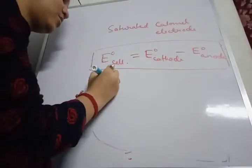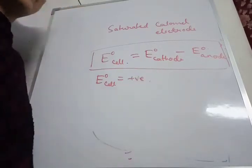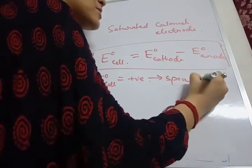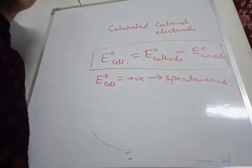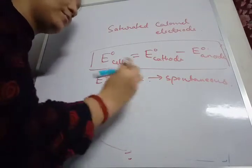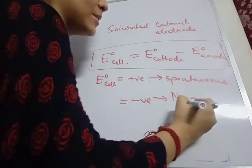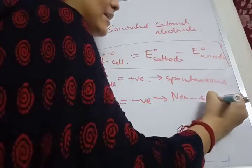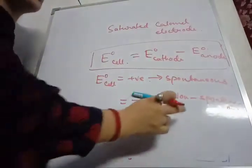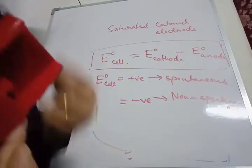The sign of E⁰ cell tells us: if E⁰ cell is positive, the reaction is spontaneous — chemical energy is converted to electrical energy and current is generated. If E⁰ cell is negative, the reaction is non-spontaneous — chemical energy will not be converted to electrical energy.